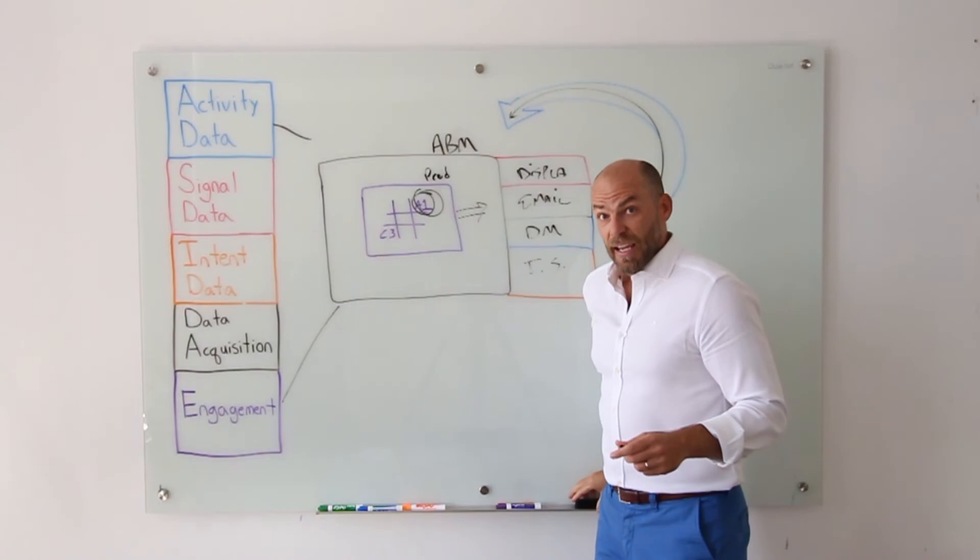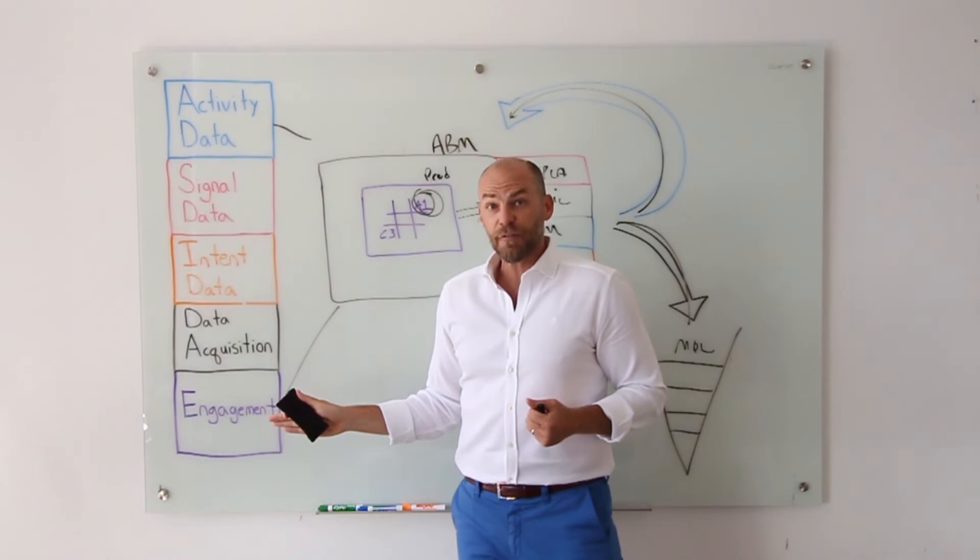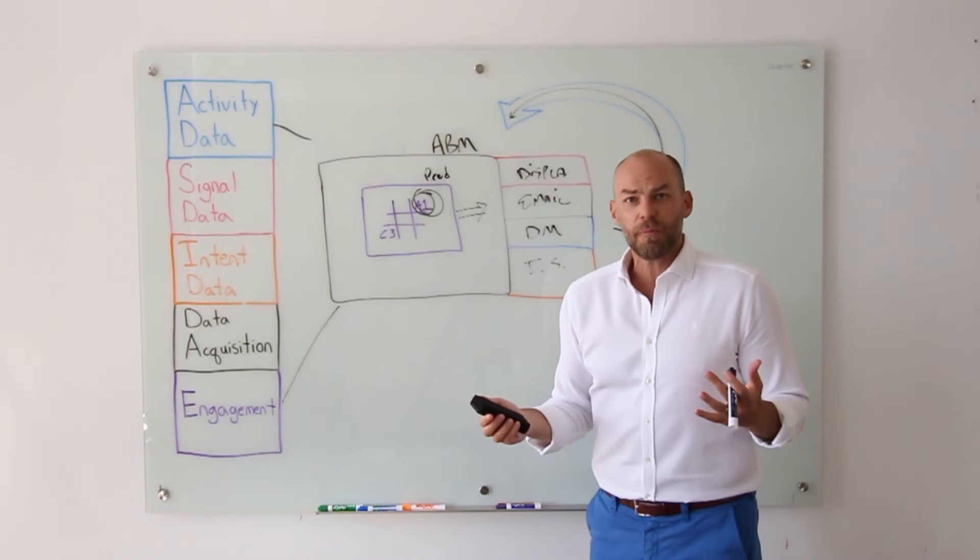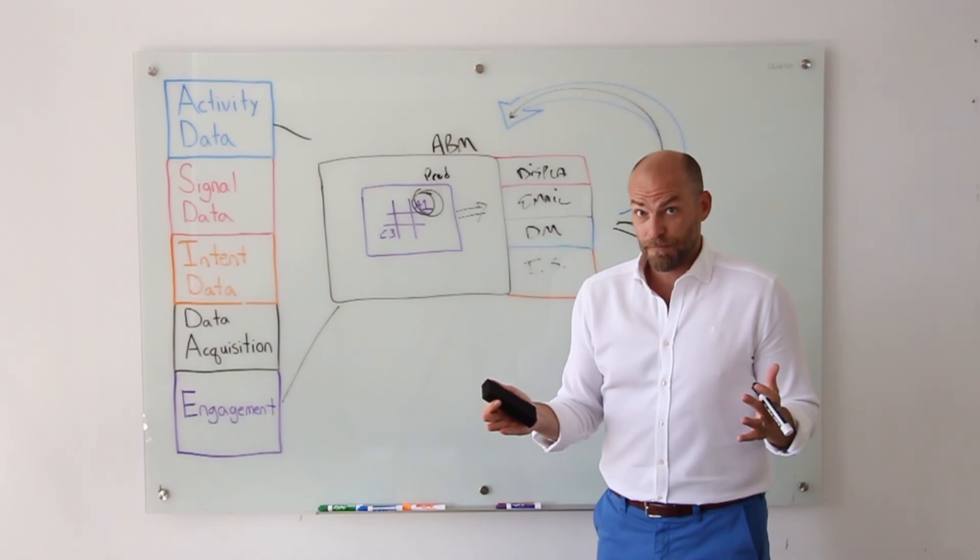If that doesn't exist, if the results of your predictive program and the output of all these different data sources is not feeding your predictive model, then you're not doing machine learning, you're not using artificial intelligence, and you're not always getting better.